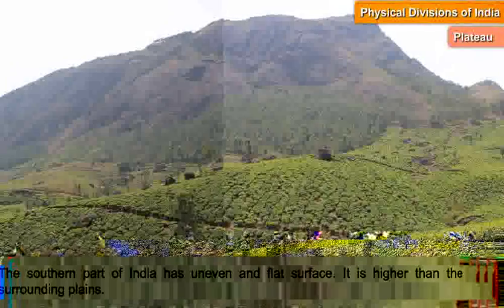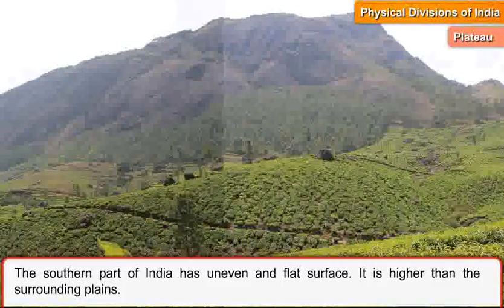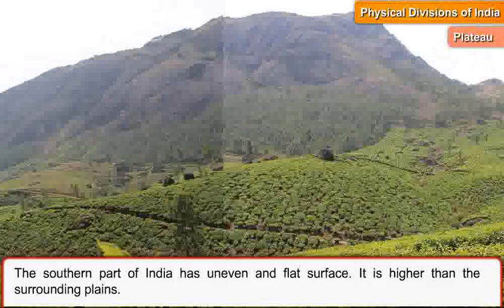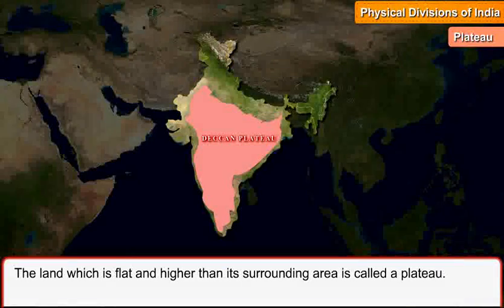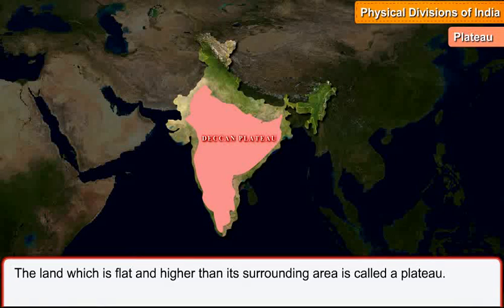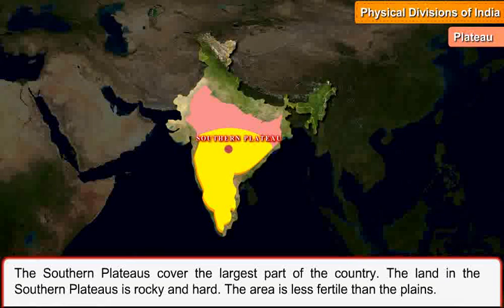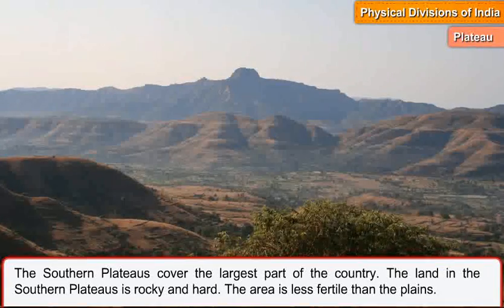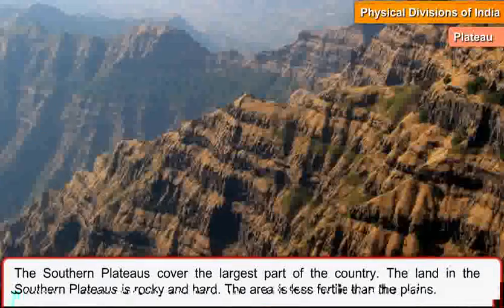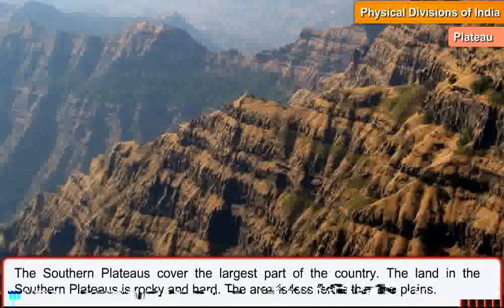Plateau. The southern part of India has uneven and flat surface. It is higher than the surrounding plains. The land which is flat and higher than its surrounding area is called a plateau. The southern plateaus cover the largest part of the country. The land in the southern plateau is rocky and hard. The area is less fertile than the plains.